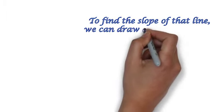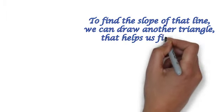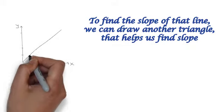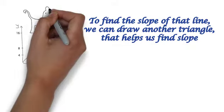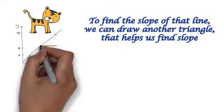So to find the slope of that line, we can draw another triangle, and that helps us find slope. So there's a cheetah, and some people call this a slope triangle.